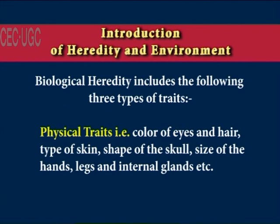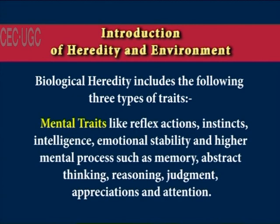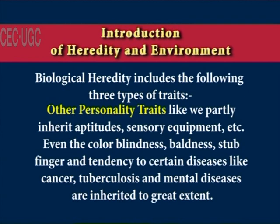Biological heredity includes three types of traits. Physical traits include color of the eyes, hair, type of skin, shape of the skull, size of the hands, legs, and internal glands. Mental traits include reflex actions, instincts, intelligence, emotional stability, and higher mental processes such as memory, abstract thinking, reasoning, judgment, appreciations, and attention. Other personality traits include partially inherited aptitudes and sensory equipment.